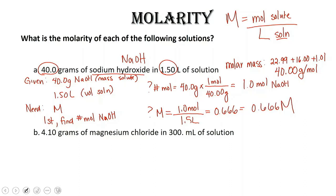Let's take a look at our second problem. 4.10 grams of magnesium chloride in 300 milliliters of solution. Once again, we've got to find our molar mass of magnesium chloride. That's going to be 24.31 plus 2 times 35.45, which gives us 95.21 grams per mole.